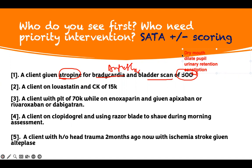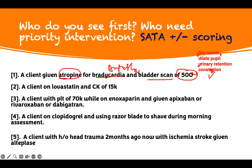Among these four things, which one should you be more concerned about? That's what the question is asking you. If a patient on atropine has constipation, I'm not worried about them. If they have urinary retention, I'll insert a Foley catheter and drain the urine. Dry mouth — I'll let them suck on some sugar-free candy. But dilating your pupil is the most important for any anticholinergic medication.